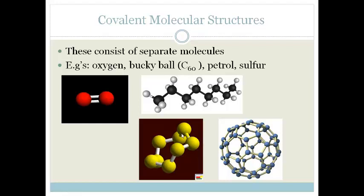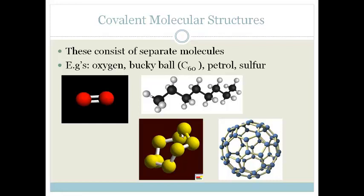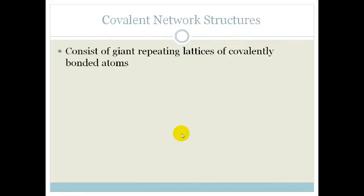So these are molecular structures compared with covalent network structures. Now, these are giant repeating lattices of covalently bonded atoms. So far, the only lattices we've learned about are your ionically bonded substances. But we do get covalently bonded lattices.